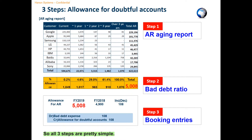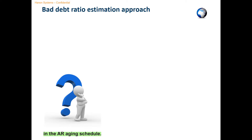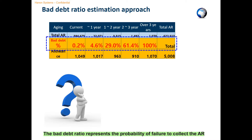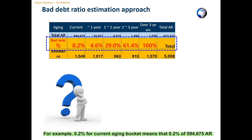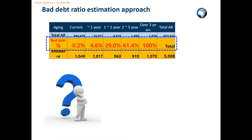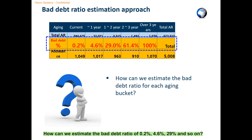All three steps are pretty simple. The key question is: how can we compute the bad debt ratio for each aging bucket in the AR aging schedule? The bad debt ratio represents the probability of failure to collect the AR in the end. For example, 0.2% for the current aging bucket means that 0.2% of $594,675 of AR will not be collected in the end.